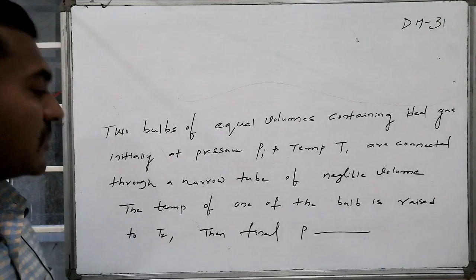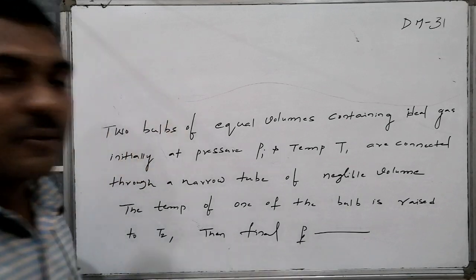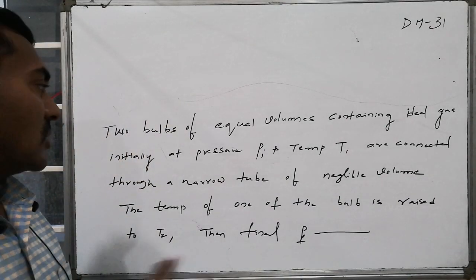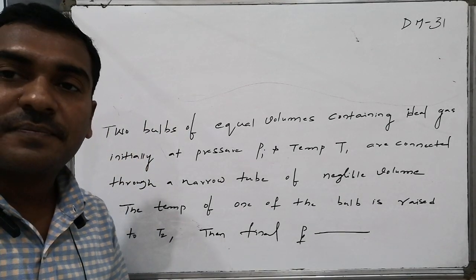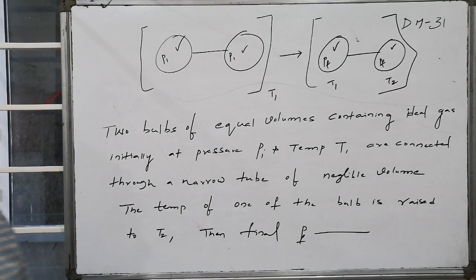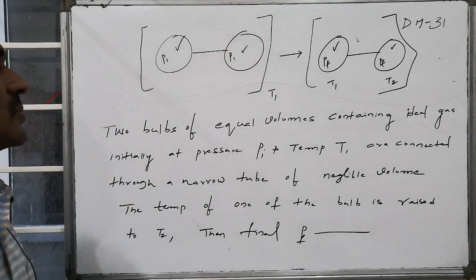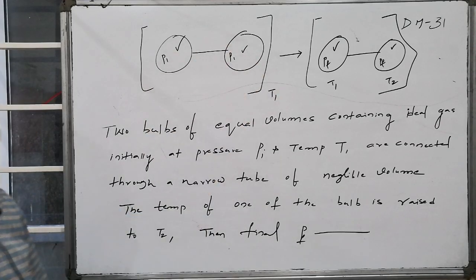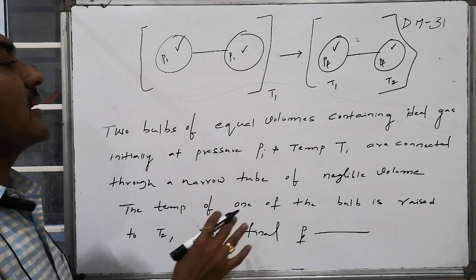The temperature of one bulb is raised from T1 to T2. Then the final pressure PF of the connected bulbs is how much? The graphical presentation of the problem shows two bulbs, both having equal capacity, both having the same ideal gas.